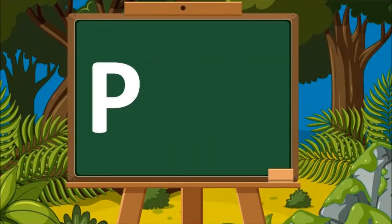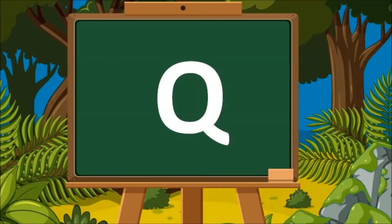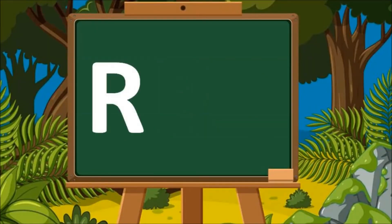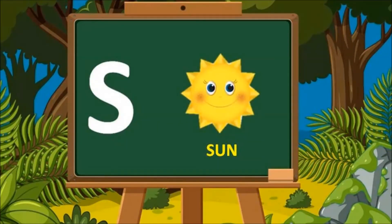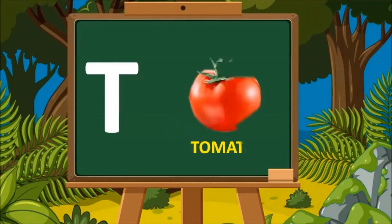P for Penguin. Q for Queen. R for Rose. S for Sun. T for Tomato.